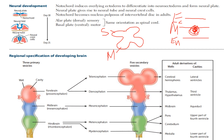The alar plate is going to be induced dorsally by BMP — bone morphogenetic proteins. The basal plate is going to be induced by Sonic Hedgehog genes, which is SHH.